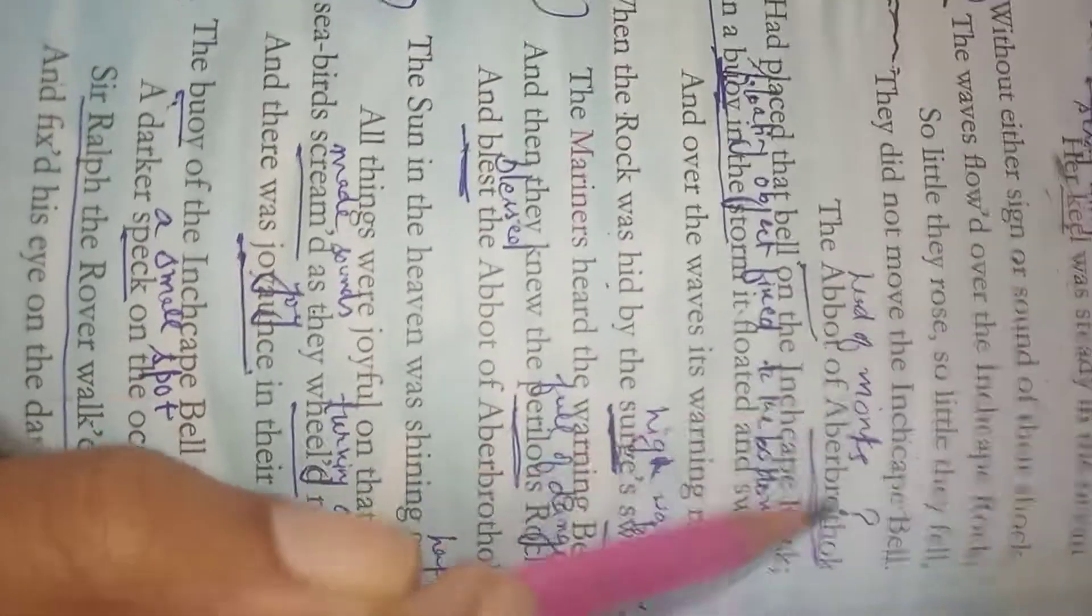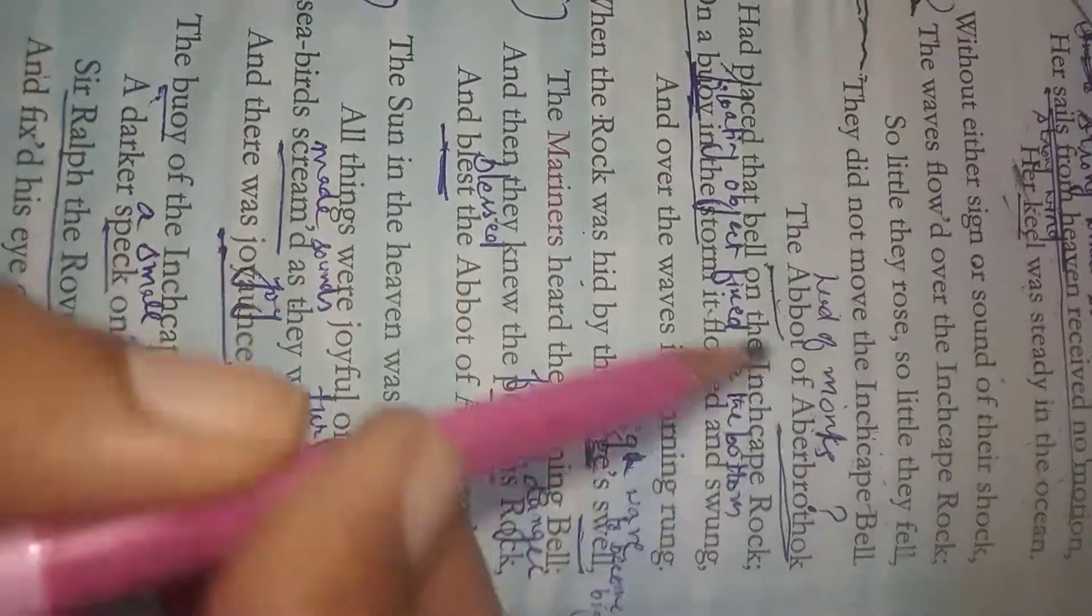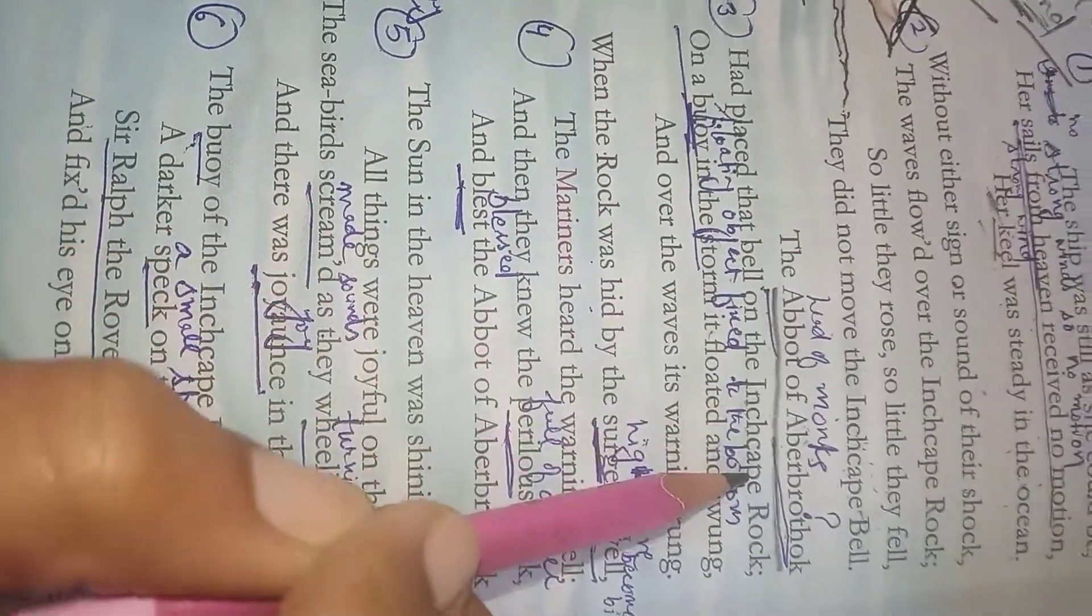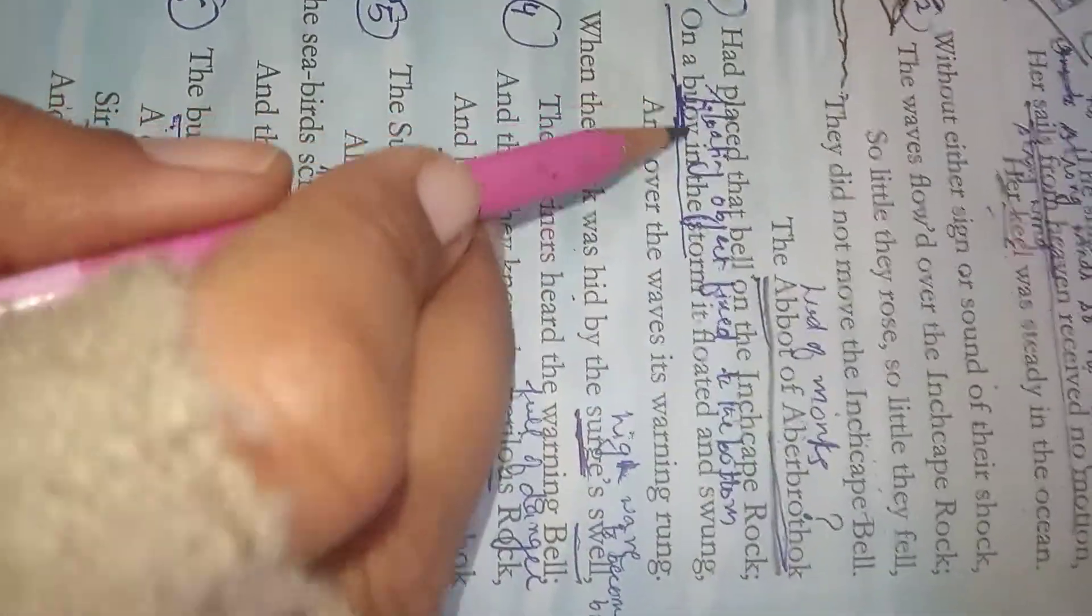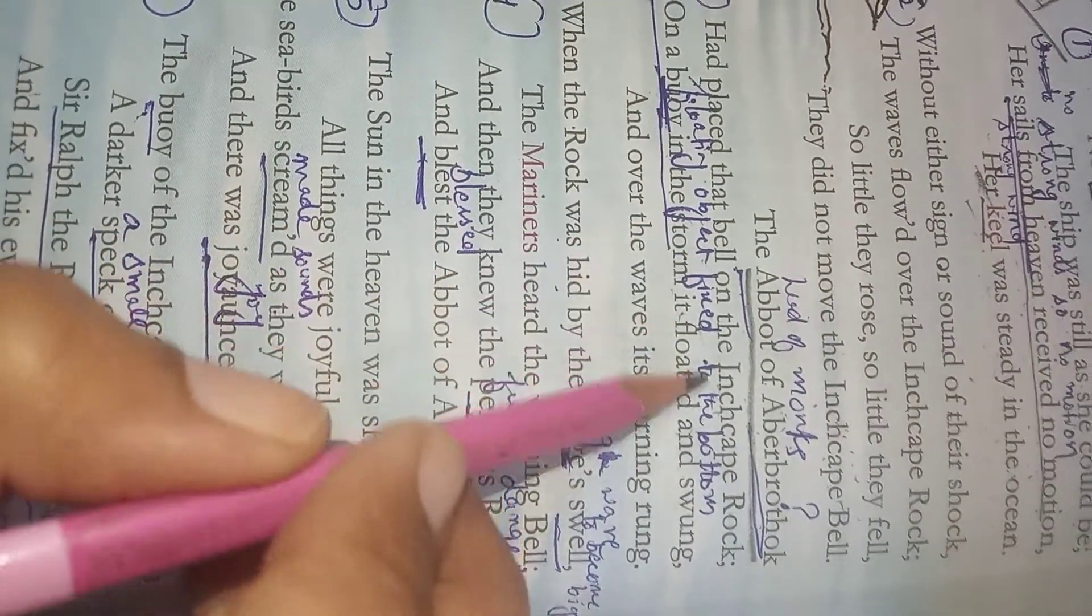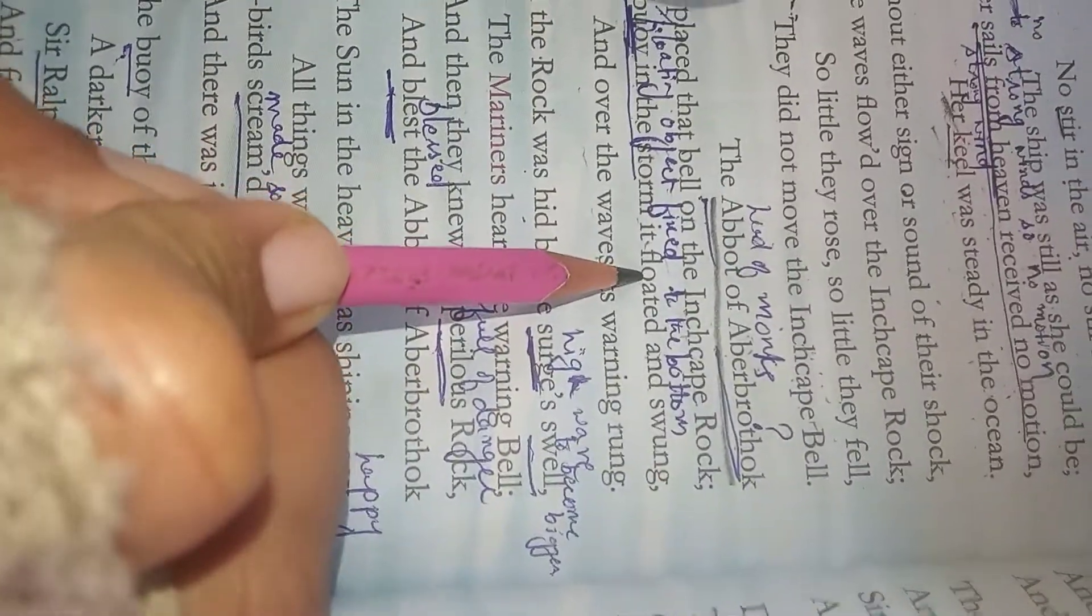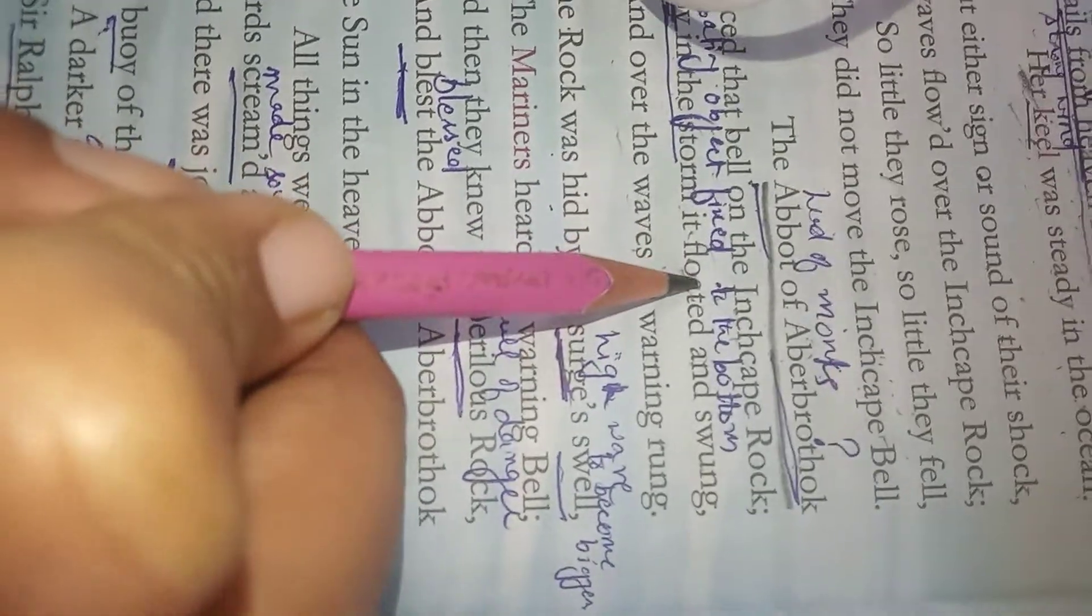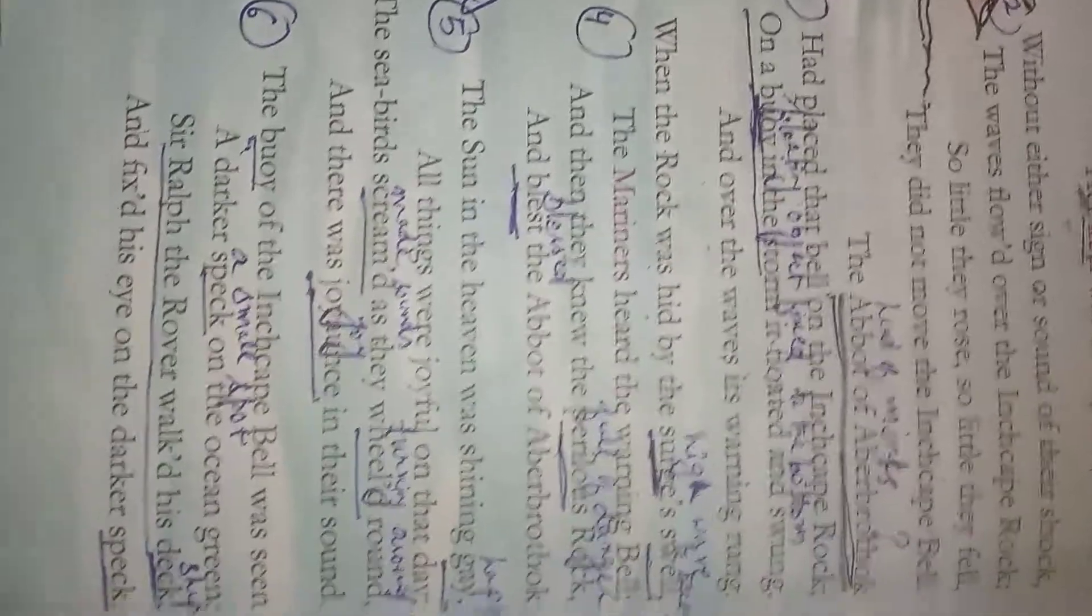Stanza three. The Abbot of Aberbrothok - first of all, abbot means the head of monks, the head of a priest. Aberbrothok is a name of place. So the Abbot of Aberbrothok had placed that bell on the Inchcape Rock. Here it is told who placed this bell. On a buoy in the storm it floated and swung - on the buoy in the storm, when any floating object is there fixed at the bottom, that means the buoy, and over the waves its warning rung. So Abbot of Aberbrothok was a spiritual person, he was a priest. As he thought for the well-being of people, he hung the bell over the Inchcape Rock so that the sailors can be aware of the rock. Sailors can know that there is rock from the warning bell and they can move from somewhere else.